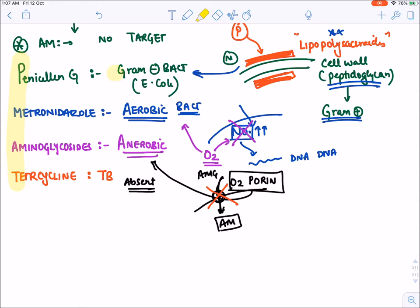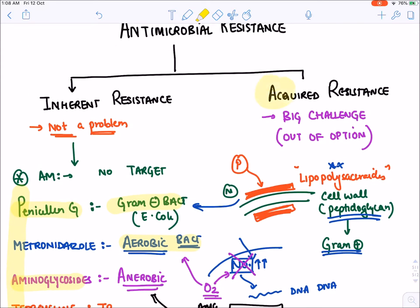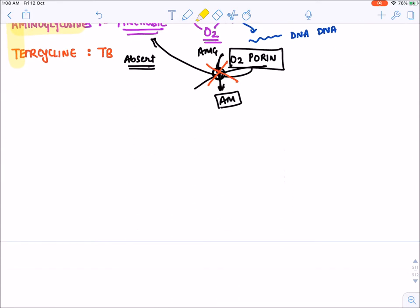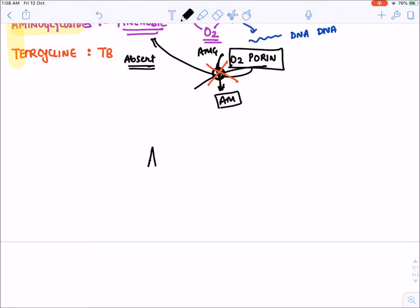These are examples of inherent resistance, which is not a big problem. In gram-negative bacteria we will not use Penicillin G — we will use another class of antibiotic. In aerobic bacteria we will not use metronidazole — we will use aminoglycosides instead. The big problem we have is acquired resistance. In acquired resistance, with the course of time, the bacteria has acquired resistance.